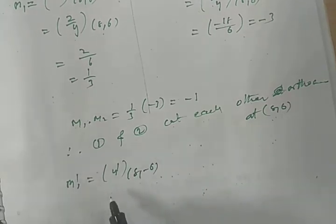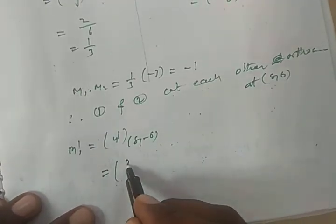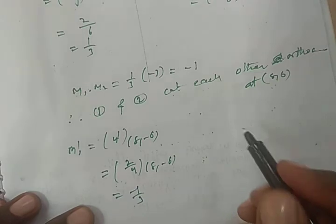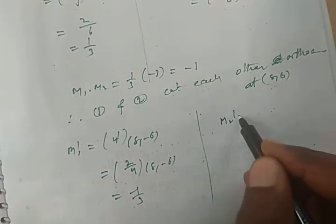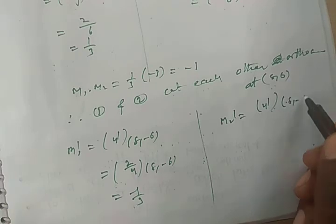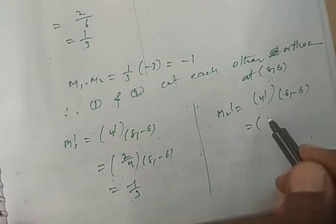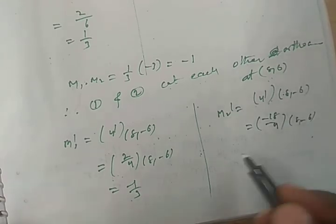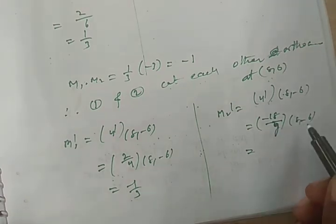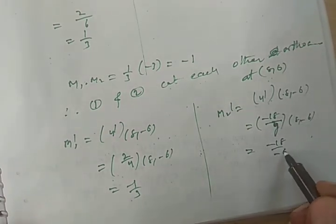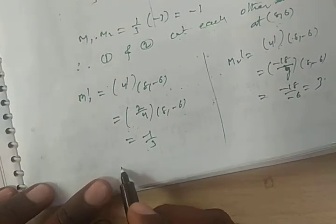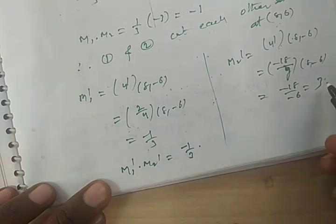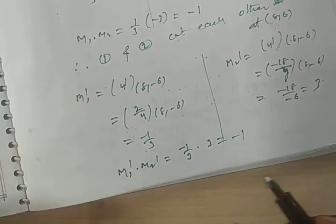At point (8, −6): slope m1' of the first curve = 2/y = 2/(−6) = −1/3. Slope m2' of the second curve = −18/y = −18/(−6) = 3. Clearly, m1' × m2' = (−1/3) × 3 = −1.